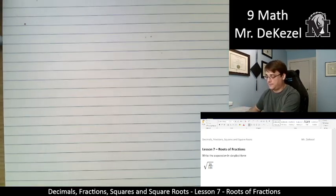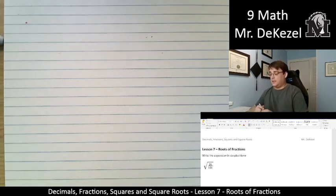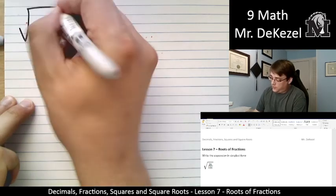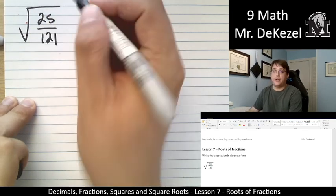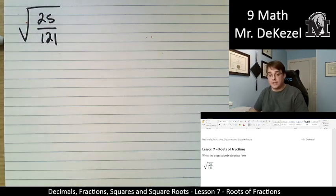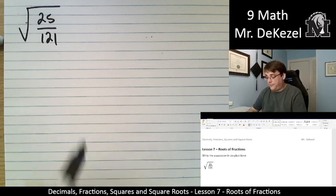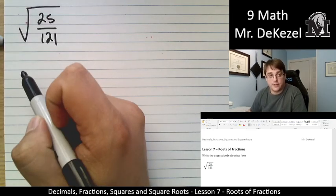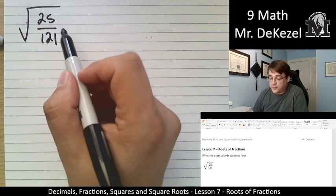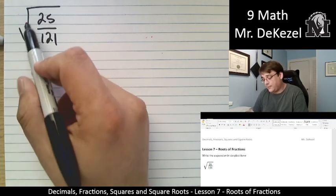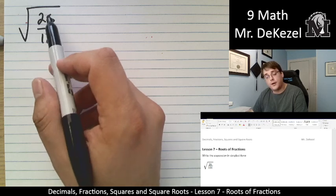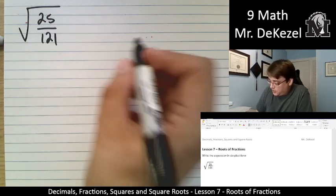The first question is the root of 25 over 121. When we have a fraction that is all under the square root sign, we can actually just break this up into two pieces. We can have the root of 25 over the root of 121. Let me show you what I mean.